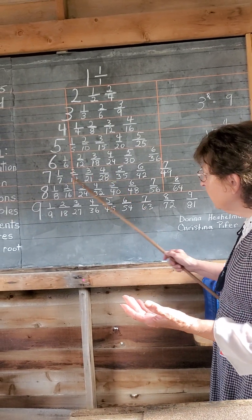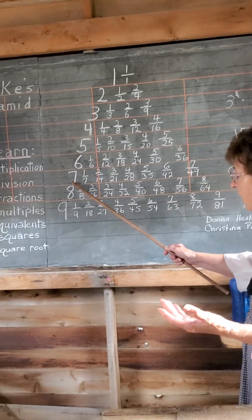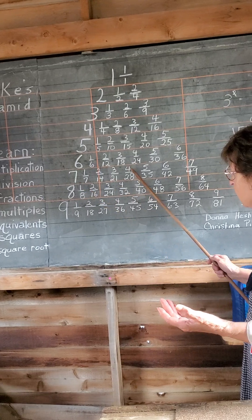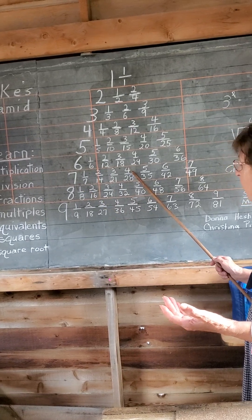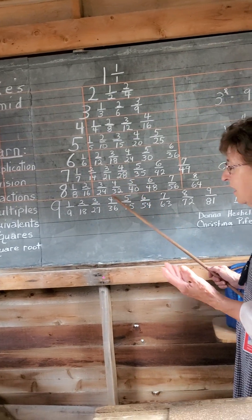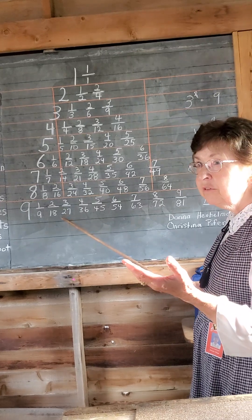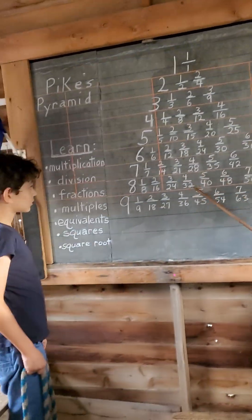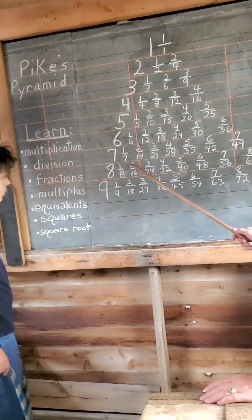Division is just the reverse of that. Twenty-eight divided by four is? Or, twenty-eight divided by seven is? Oh my gosh. You understand division? You with me on division? Halfway? Okay. I do division.